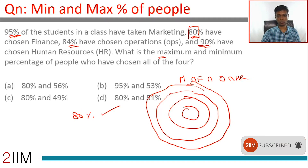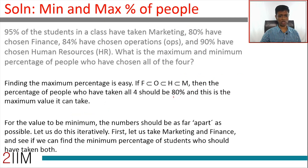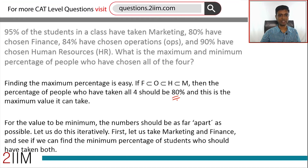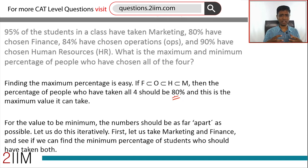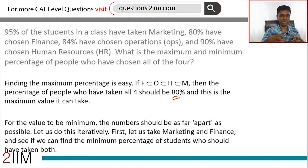Now let's move to the tougher part — finding the minimum. To recap: the maximum possible is 80%, the smallest of the four sets. For the intersection to be minimum, the sets should be as far apart as possible, as spread out as possible.